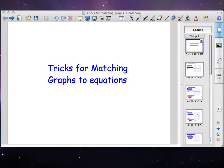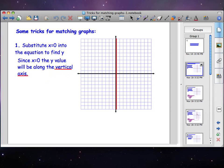Okay, so today we're going to learn some tricks for matching graphs to equations. The first trick is to substitute zero in for x. Since x would be zero, we know that the point we find for y has to be along this vertical axis right here.